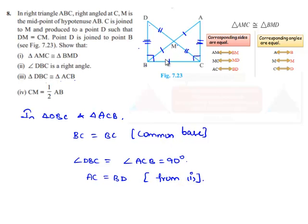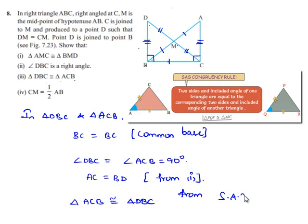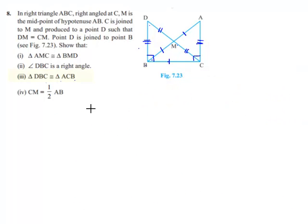Since side, angle, and side of both triangles are equal correspondingly, by SAS property, triangle ACB is congruent to triangle DBC. Therefore, triangle DBC is congruent to triangle ACB, which is our third proof.